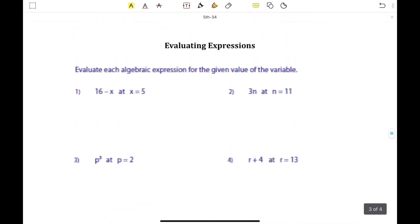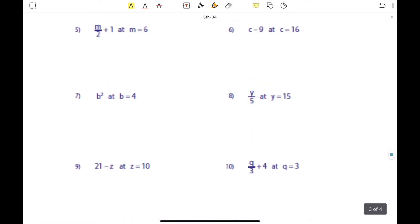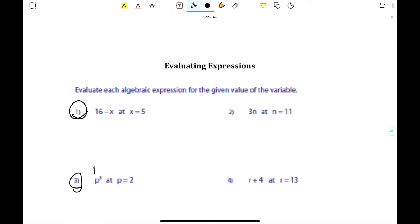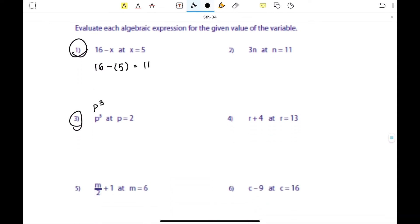And now this does look a little blurry, but I think you should be able to read all of them. And we're going to go over number 1 and number 3 together. This should be p to the third power. So it says, evaluate expressions. Evaluate each algebraic expression for the given value of the variable. 16 minus x, and x equals 5. And they tell you that x is 5. So all we need to do is plug in that 5 for x. 16 minus 5, and we should get 11. Now we're going to do number 3. p cubed, and they give us that p equals 2. So it's 2 to the third power, which is the same thing as 2 times 2 times 2, which is 8. Simple.